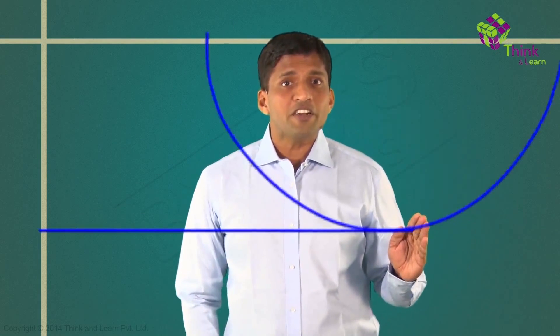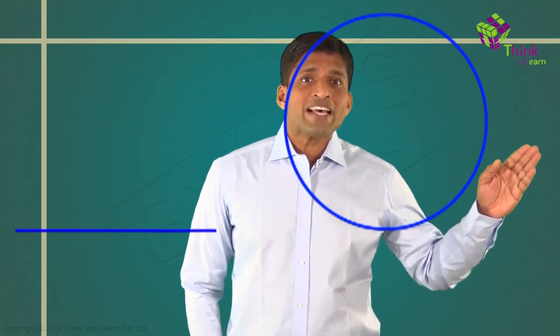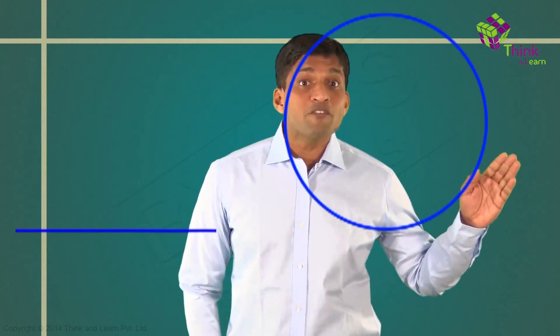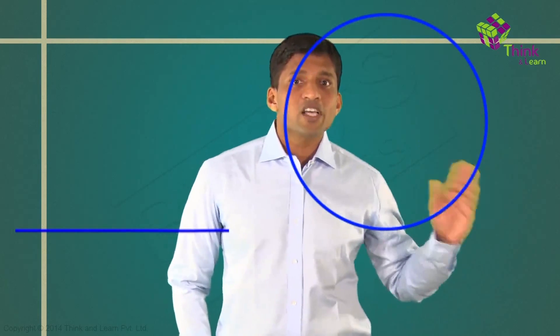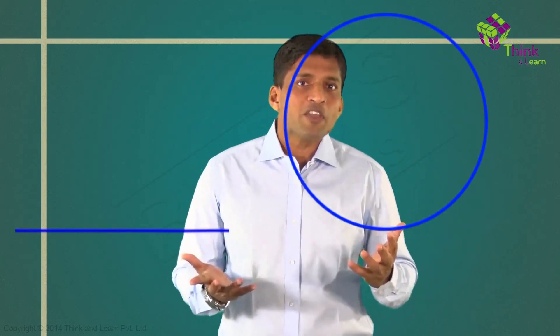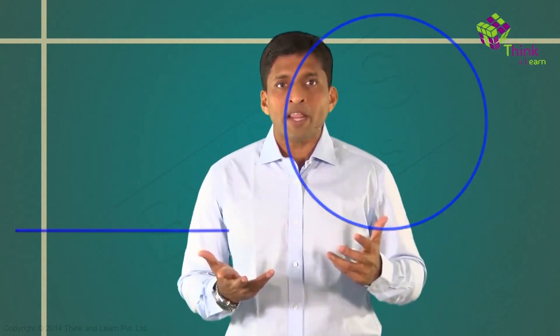Now cut the circle, straighten it out, and I get a line — and that's where we started from. So a line can be taken as a circle with infinite radius, and a circle can be taken as a polygon with infinite lines. Line to circle, and everything in between, is what we need to learn in plane geometry — so it's very simple.